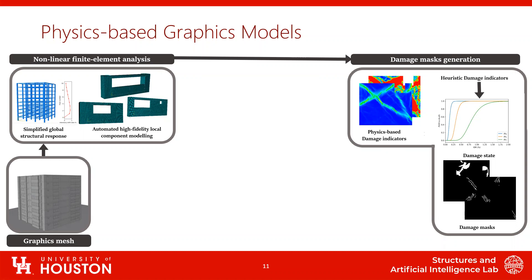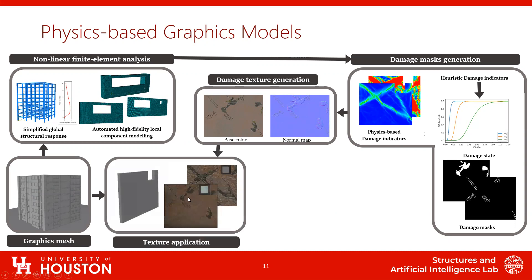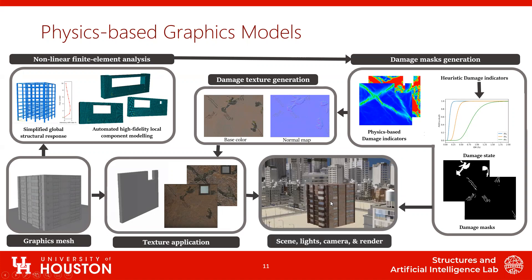The next step is to convert these damage masks to photorealistic textures. We use computer graphics models together with noise-based texture generation to get those texture maps. We have textures for each component, then combine them to apply those textures to the graphics mesh. If you do that for all the components, you get your building. Then you can put it in the scene, add lights, set backgrounds, set your cameras, and render pictures from that scene. That's the overall process for these physics-based graphics models.